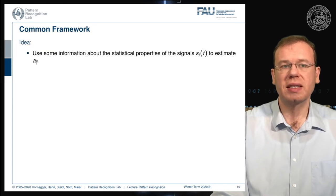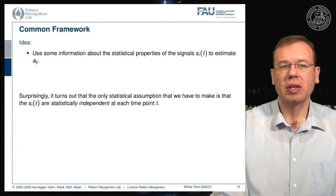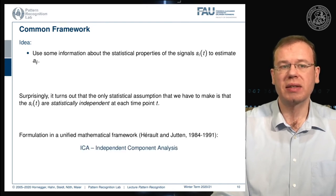So the common framework is that we have some information about the statistical properties of the signals in order to estimate the mixing coefficients AIJ. Now it turns out that the only statistical assumption that we have to make is that the signals are statistically independent at each time point T. And this then gives rise to the independent component analysis that has been formulated in a unified mathematical framework by Herro and Juten in the years 1984 to 1991.